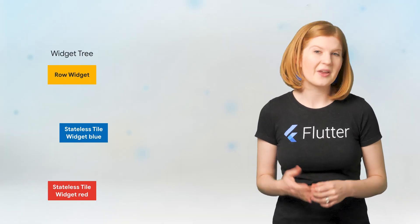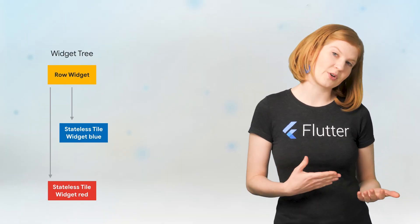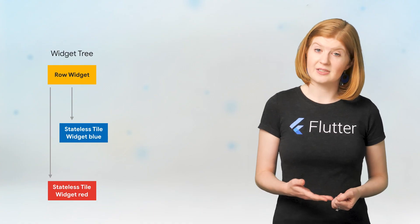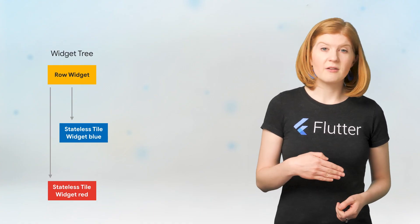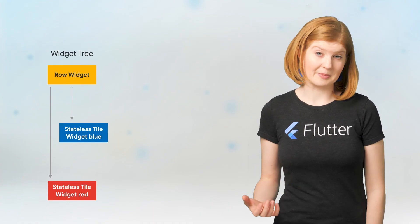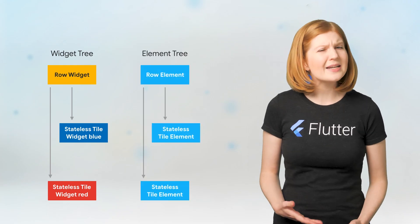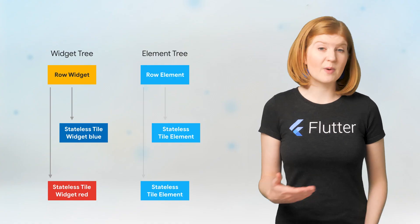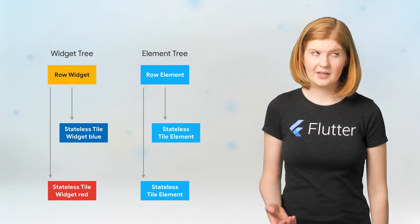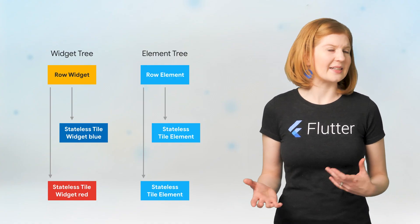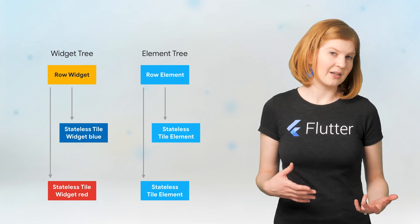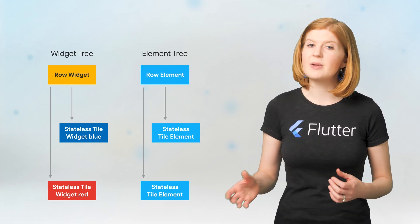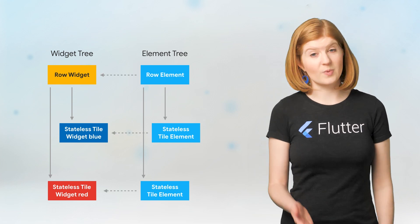In the stateless widget version, the row widget has a set of ordered slots for its children. For every widget, Flutter builds a corresponding element. The element tree is extremely simple, only holding information about the type of each widget and a reference to children elements. You can think of the element tree like a skeleton of your Flutter app — it shows the structure, but all the additional information can be looked up via reference to the original widget.